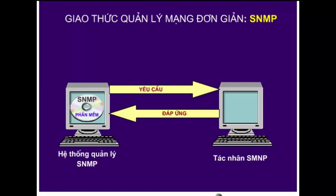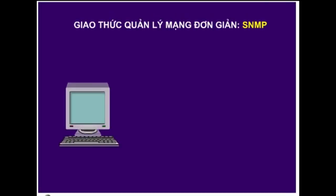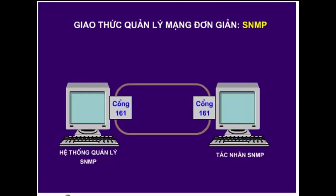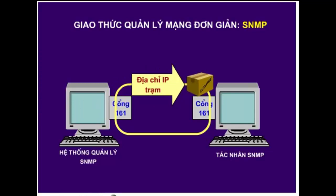Một tác nhân thường là một máy chủ hoặc router được cài đặt phần mềm tác nhân. Chúng ta hãy cùng tìm hiểu cách thức hoạt động của SNMP. Hệ thống quản lý SNMP gửi yêu cầu đến một tác nhân sử dụng tên hoặc địa chỉ IP của nó. Yêu cầu này được ứng dụng chuyển đến cổng UDP-161.